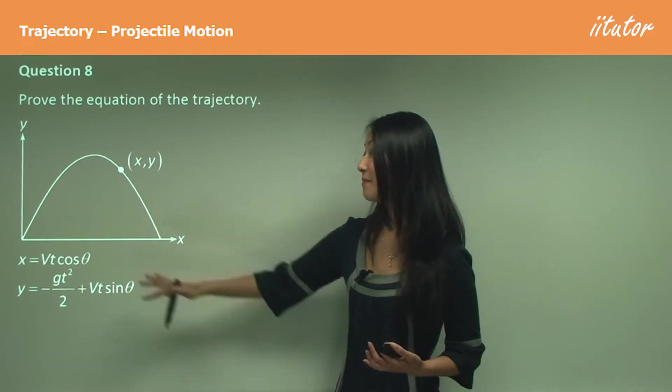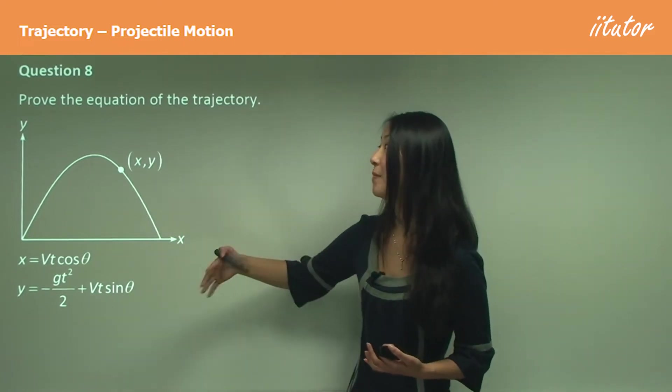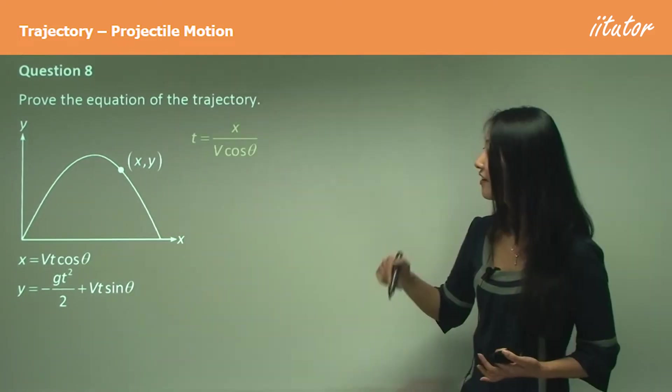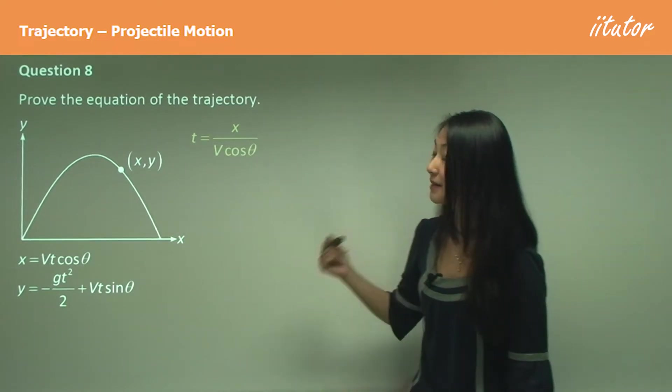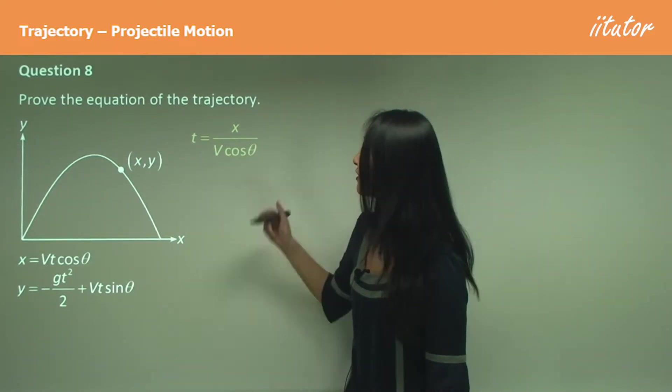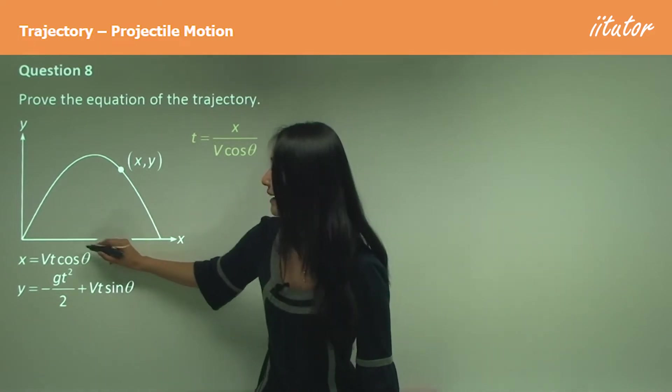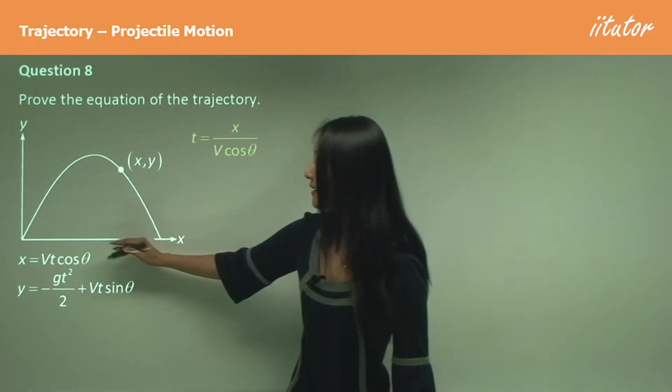In an exam situation, if this came up as a question, part A may be working that out and then part B would be proving this. First of all, to eliminate t, what we're going to do is make this t the focus of that, so t equals to x divided by v cos θ.